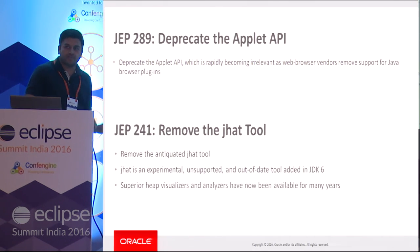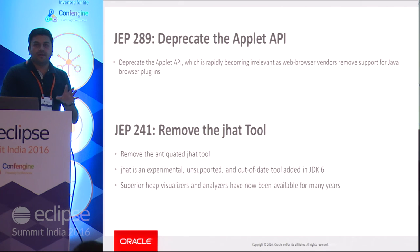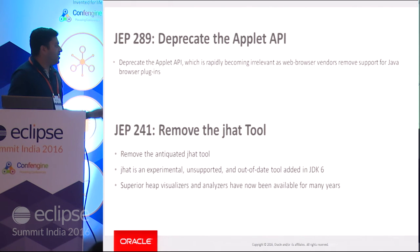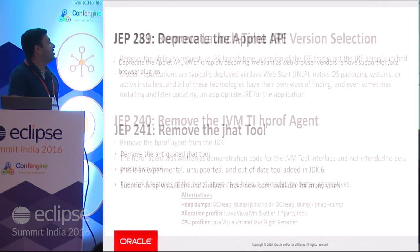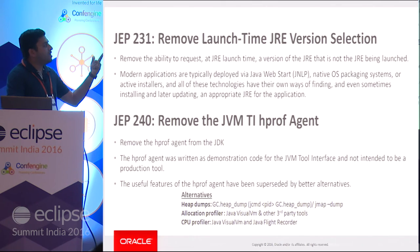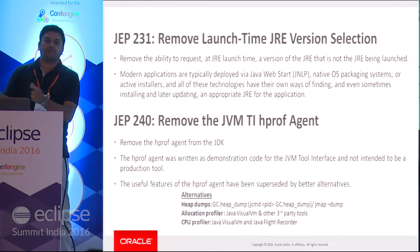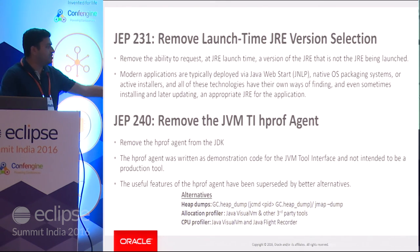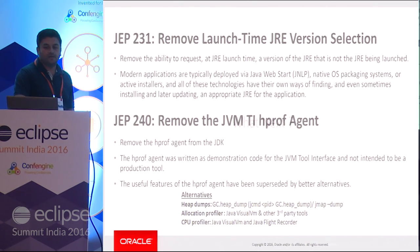Some deprecations to be aware of: the Applet API is deprecated in Java 9 and could be removed in Java 10, due to browser plugin support being removed by modern browsers. The jhat tool (always experimental) will be removed — many market replacements exist. Launch-time JRE version selection is also removed. The JVMTI hprof agent will be removed — consider migrating to VisualVM or similar tools.